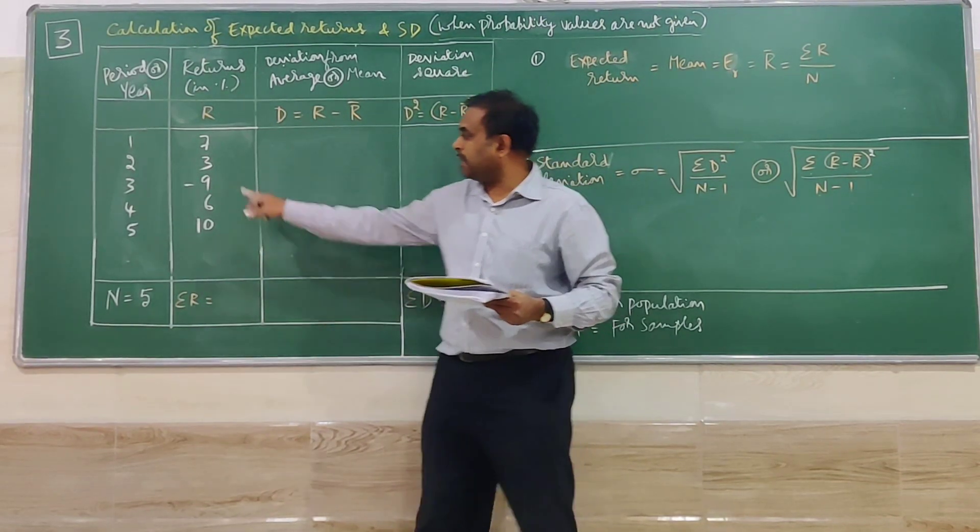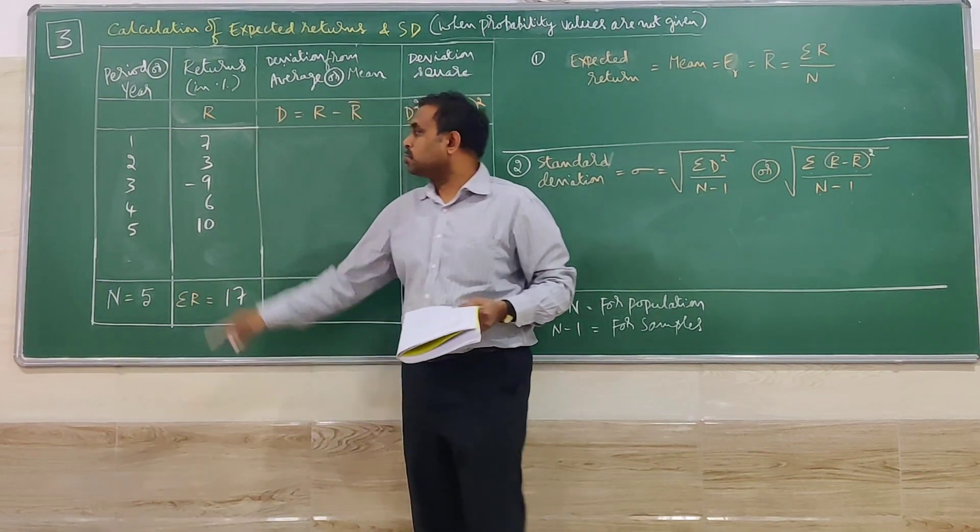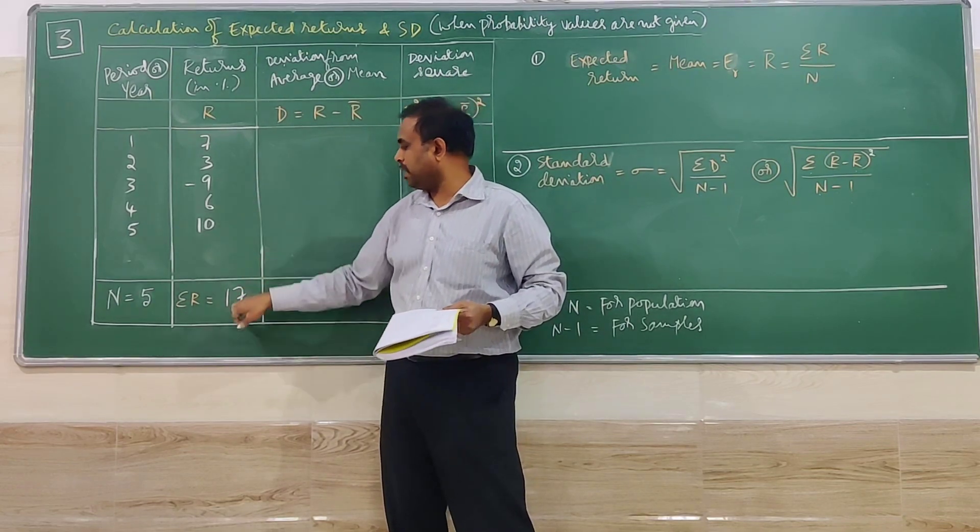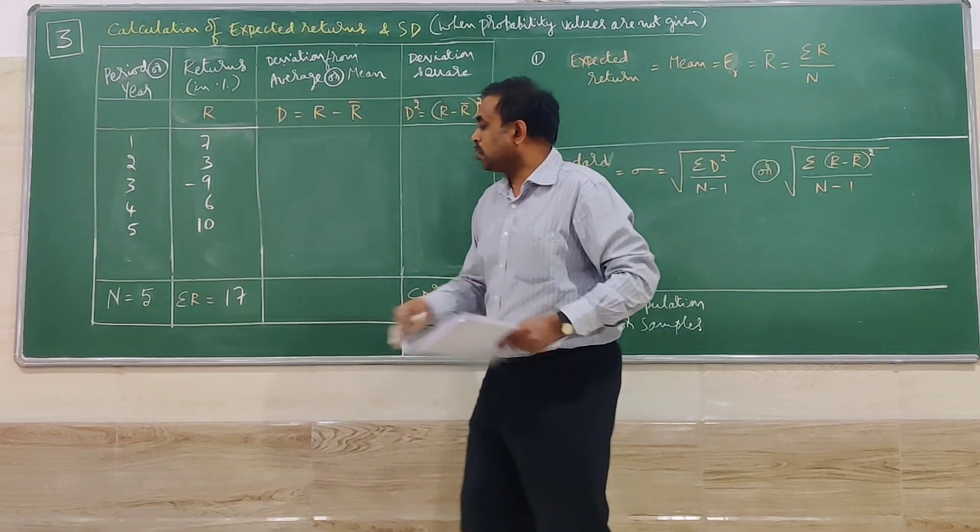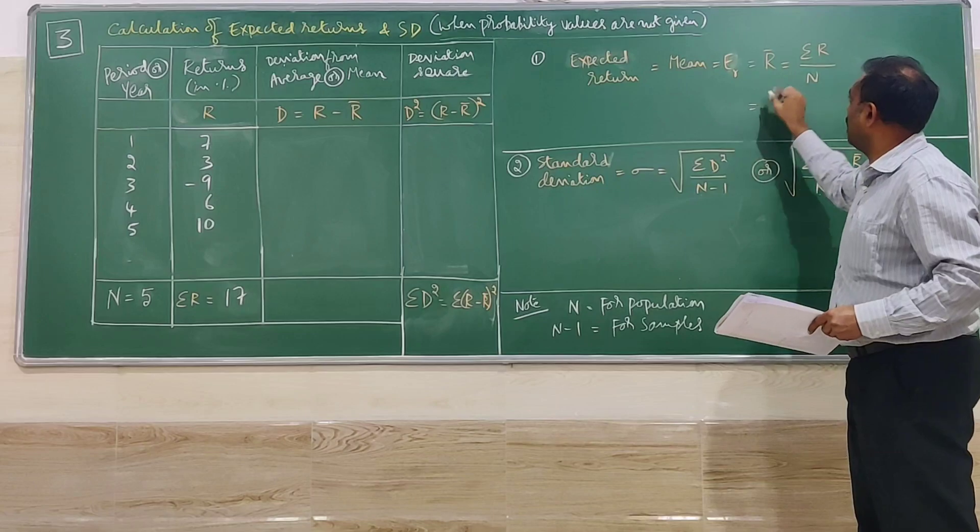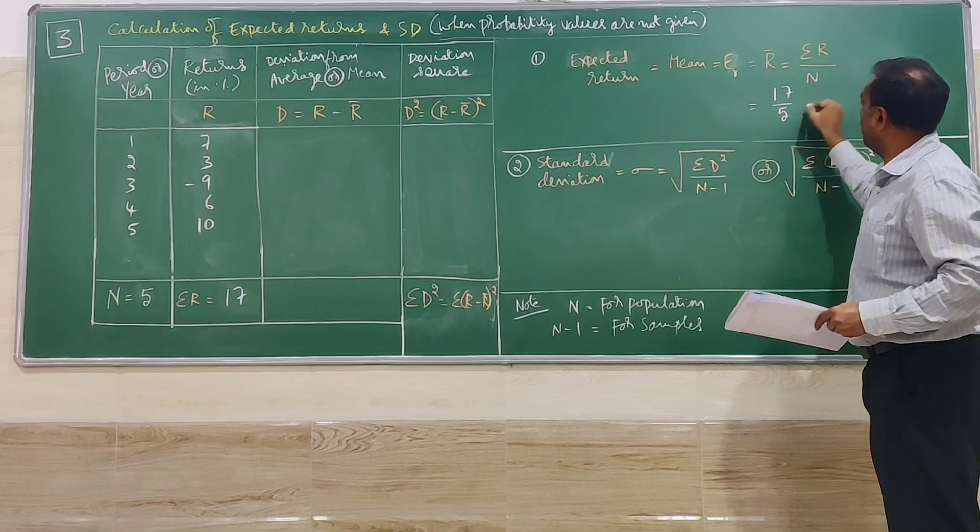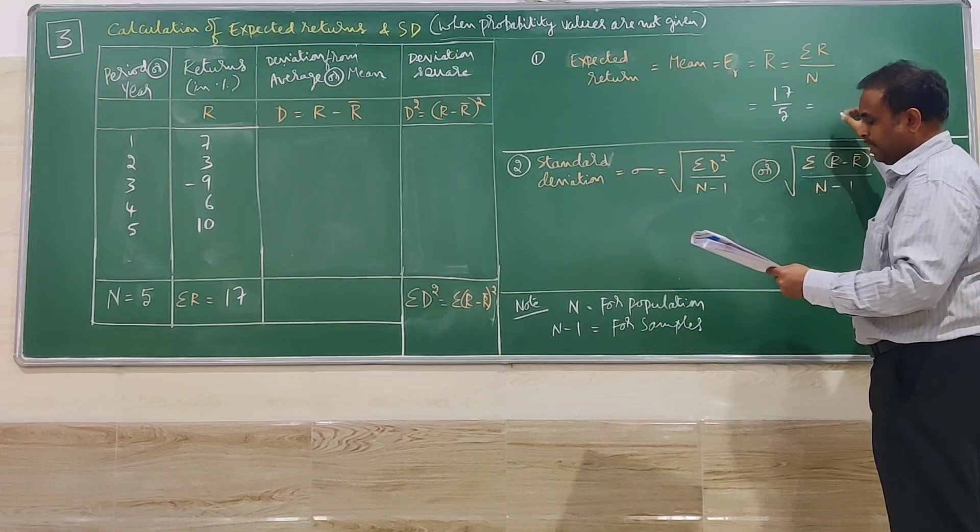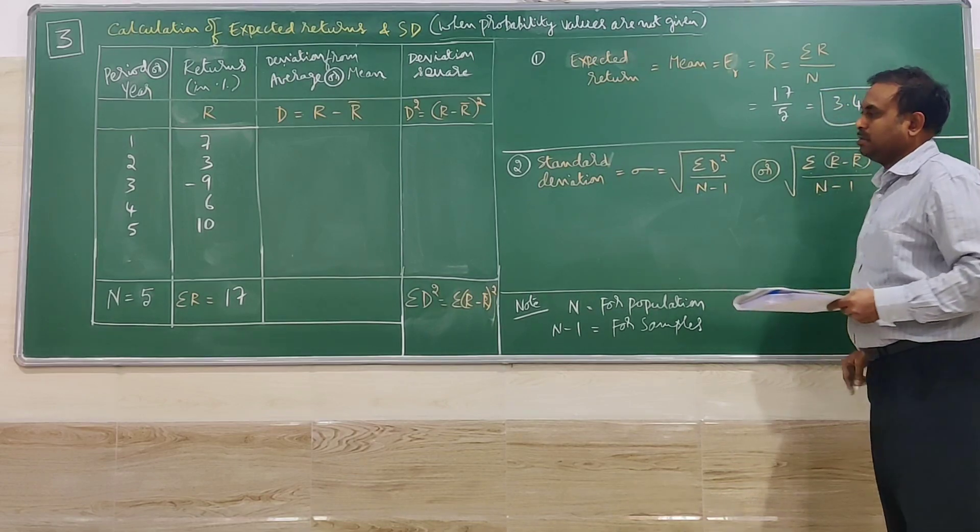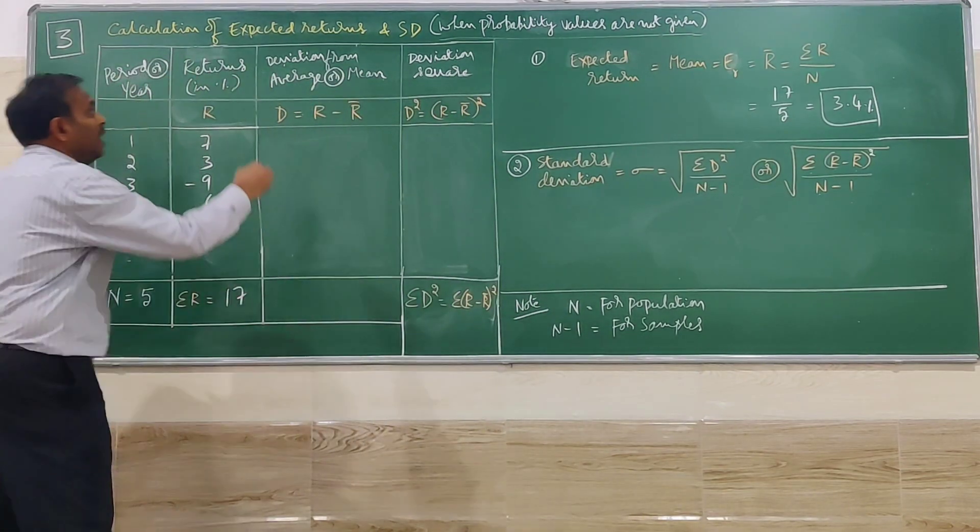For the third year it is a loss, not a profit. For the remaining four years it is profit. When you add 7, 3, 6, and 10, you get 26. Then 26 minus 9 is 17. So the total of returns is 17. The total return will be helpful for us to find the expected return. 17 divided by 5 gives us 3.4 percent.